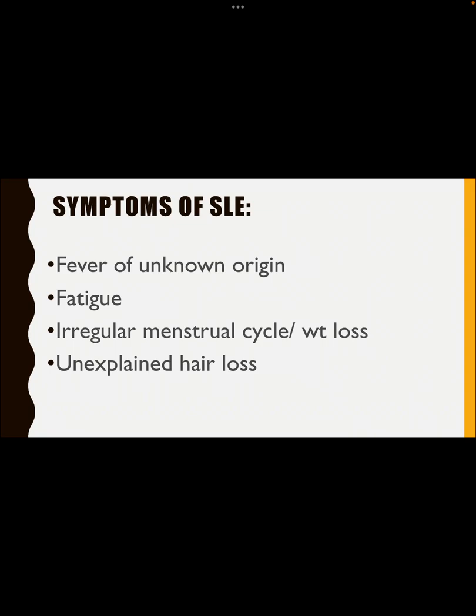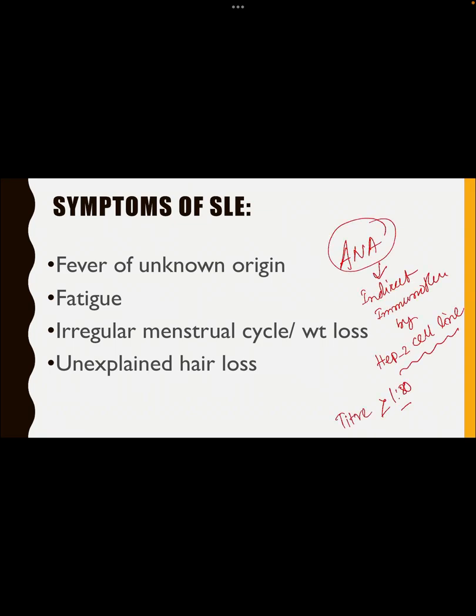As I told in previous slides, how will you screen it? Through ANA antibody screening. The method will be indirect immunofluorescence assay using Hep-2 cells. Not ELISA, because ELISA is a qualitative test — not significant. Whereas indirect immunofluorescence using Hep-2 cells is a quantitative test and it is significant. The titer must be greater than or equal to 1:80.